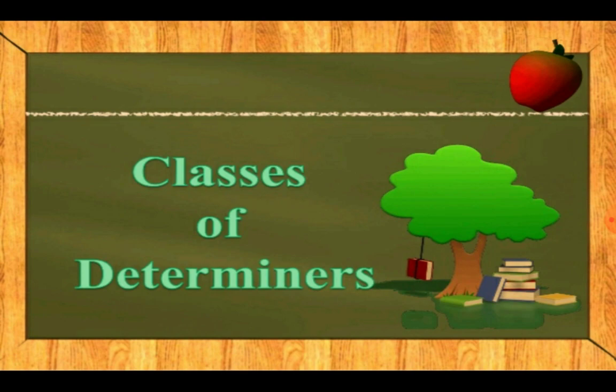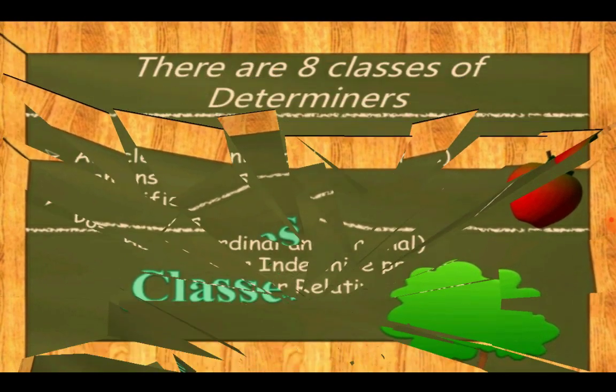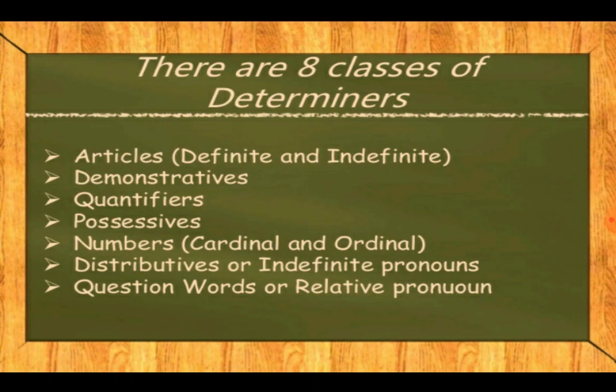So let's look at what determiners are and how many types we have in our grammar. We have eight types of determiners: articles, demonstrative, quantifiers, possessive, numbers, and more. These are the eight classes of determiners we will go through in this video.